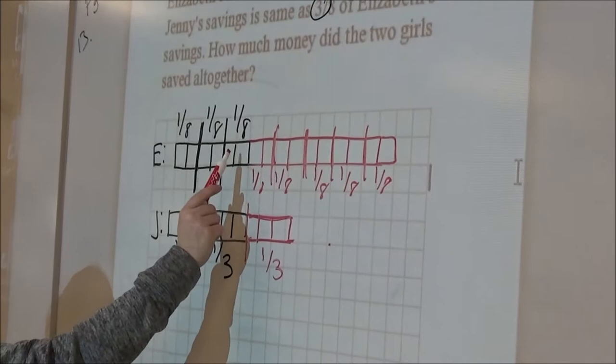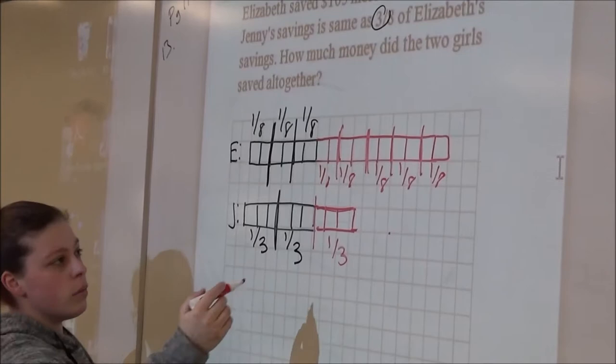And then you draw the rest of their money. One-eighth is two boxes, so you keep drawing your two boxes until you have eight. One-third is three boxes. You can draw another three boxes to complete your three-thirds.